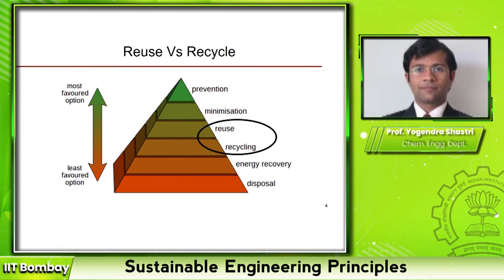The sixth principle of green engineering is related to the issue of reuse and recycle. These terms are often used interchangeably but they have different meanings. If you look at the concept of waste management, this pyramid is famously shown: whatever is at the top is the most preferred option and as you go from top to bottom you encounter less and less preferred options. The best option is to eliminate waste.